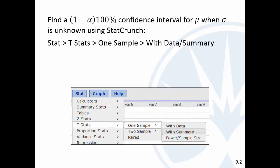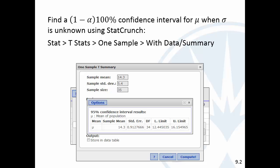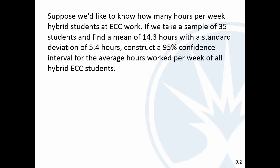So, in StatCrunch, it's under the t stats in one sample with summary or with data, depending on what you have. And then you get this output, and we'll talk more about it on the next page. All right, so suppose we'd like to know how many hours per week hybrid students at ECC work. So, let's suppose we have a sample of 35 students. We find a mean of 14.3 hours, the standard deviation of 5.4 hours. We want to construct a 95% confidence interval for the average hours worked per week of all hybrid students. So, we've got this sample size of 35. The sample mean is 14.3, and it doesn't clearly state here, but look. If we take a sample and find this with this standard deviation, this is clearly the sample standard deviation. It's clearly s, not sigma. We're going to construct a 95% confidence interval.